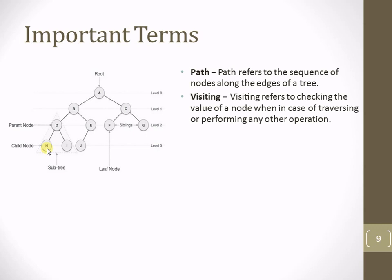The next term is visiting a node. Visiting refers to checking the value of a node when traversing or performing an operation. For example, traversing from A to J: visiting A to B means visited nodes are A and B; then B to E adds E, making visited nodes A, B, E; then E to J adds J. So the visiting nodes from A to J are A, B, E, J.